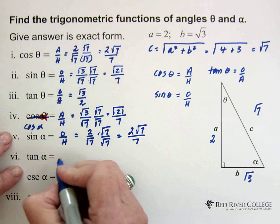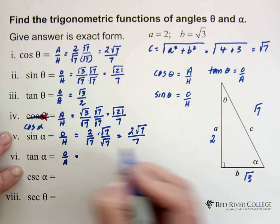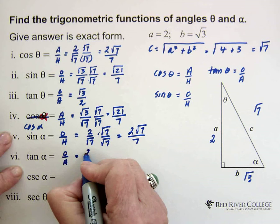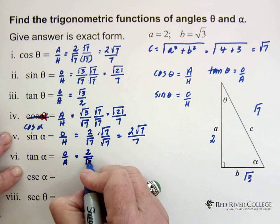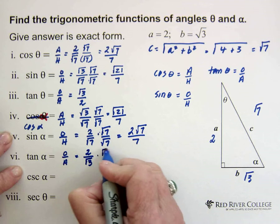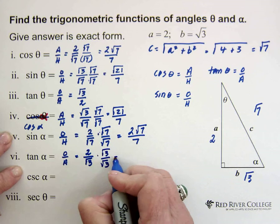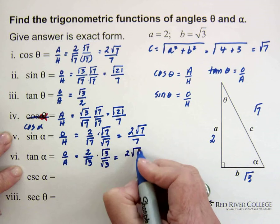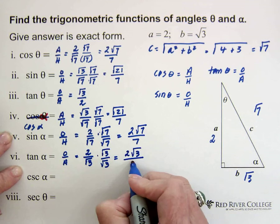The tan of alpha is opposite over adjacent. The side opposite alpha is 2, and the adjacent is B, which is the square root of 3. So we have 2 over the square root of 3. To get rid of the square root of 3 in the denominator, we multiply top and bottom by the square root of 3. These multiply together and we end up with 2 square root of 3. Square root of 3 times the square root of 3 is 3. So the answer is 2 square root of 3 over 3.